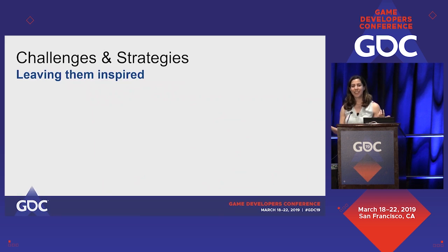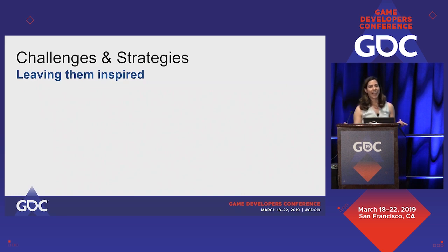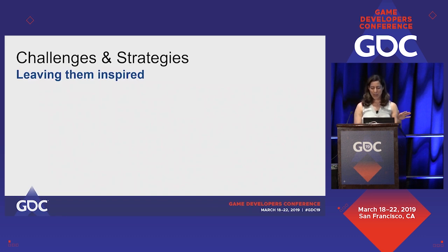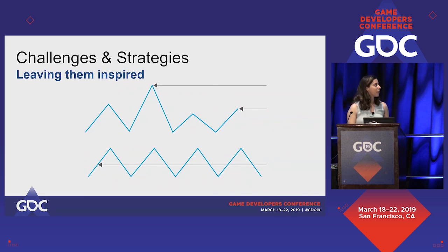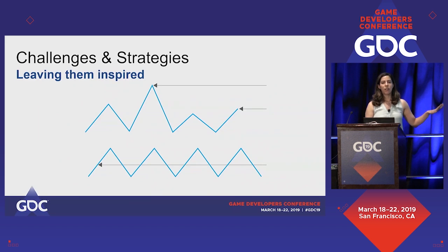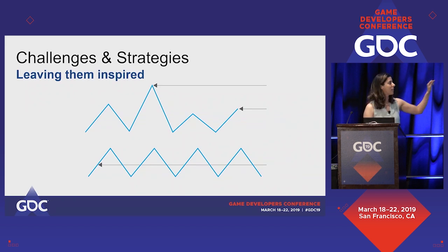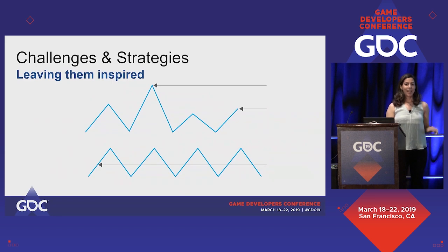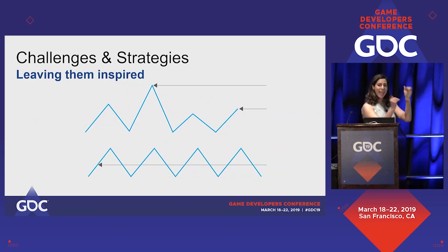Peak end theory isn't a concept that shows up in education a lot. What it comes down to is: leave them wanting more and end on a bang. Stanford and some other institutes did experiments showing that how you evaluate an experience — was that movie good, was that doctor visit good or bad — you don't just average it out. What you do is remember the extreme, whether you loved or hated it the most, and then remember how you felt at the end. You average that extreme with how you felt at the end. That's peak end theory.